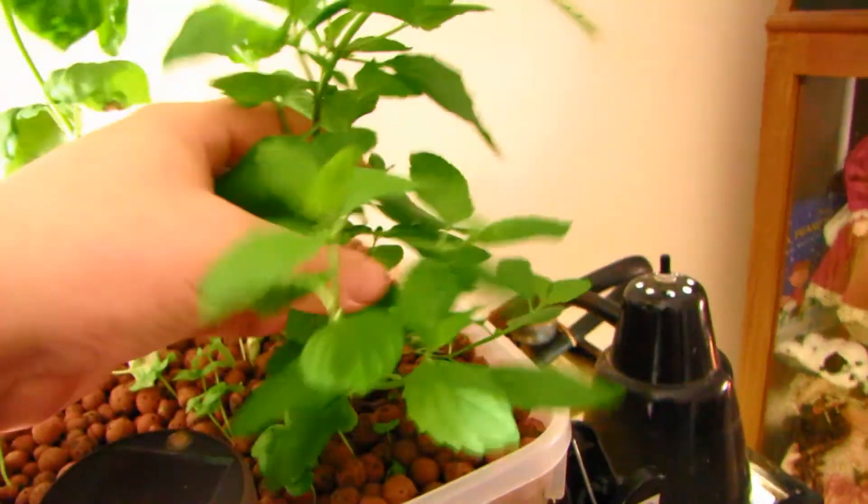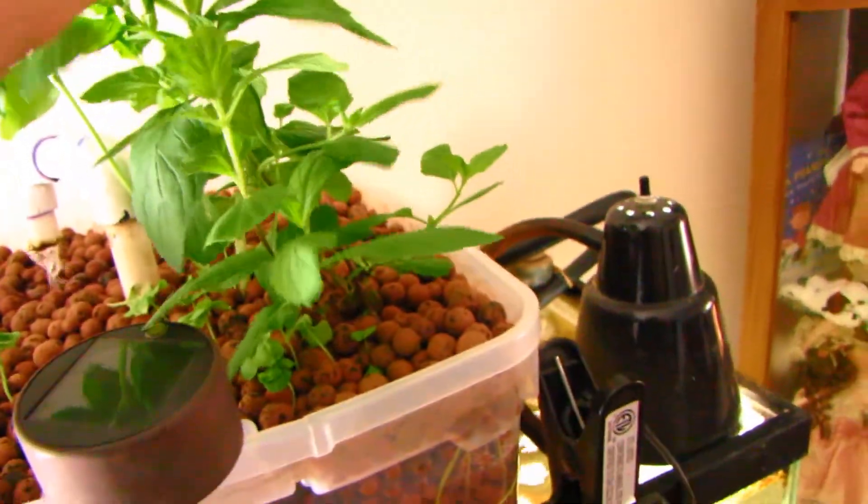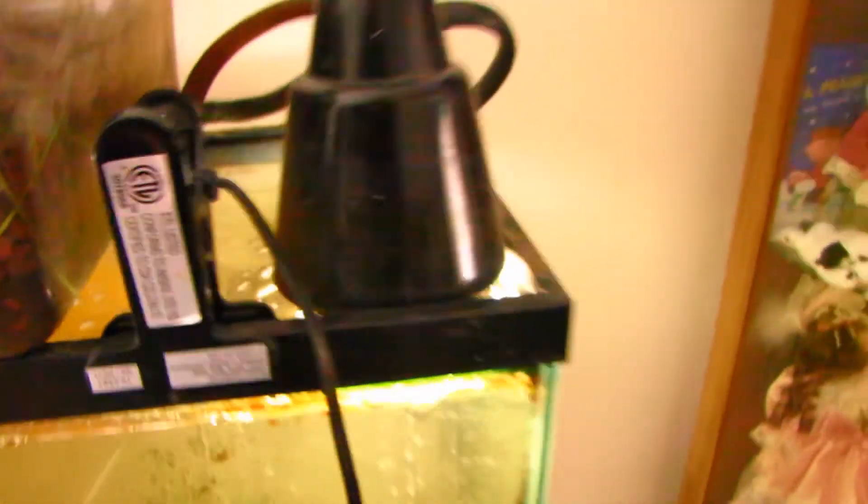Then this whole thing right here is mint. This is wild mint from the backyard. I was able to save some from the winter and get it growing again. The only problem is it does go nuts in the roots. Then I have just a small light here to actually light up the inside of the fish tank.